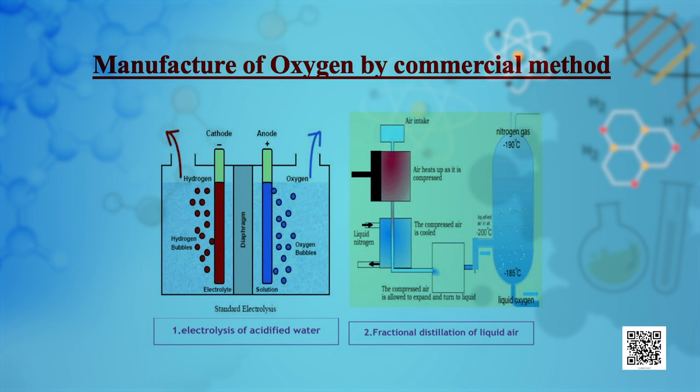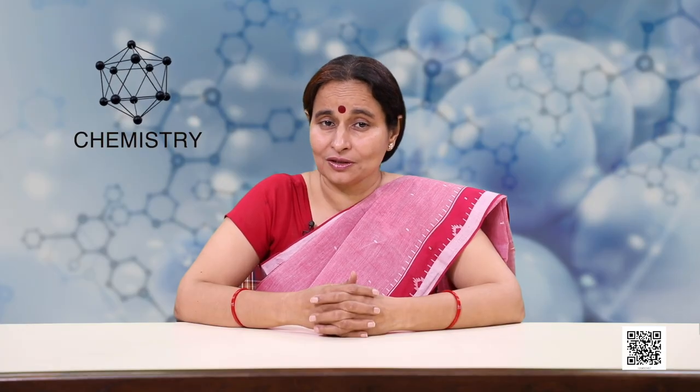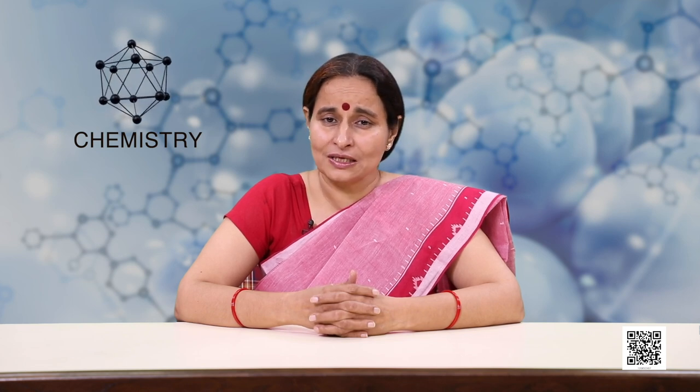Industrially, dioxygen is obtained from air by first removing carbon dioxide and water vapours, and then the remaining gases are liquefied and fractionally distilled to give dinitrogen and dioxygen. The solubility of oxygen in water is low, but it is sufficient for the vital support of marine and aquatic life.